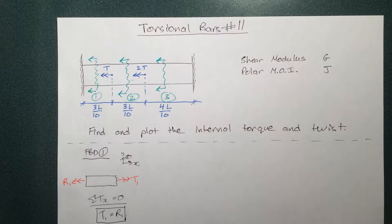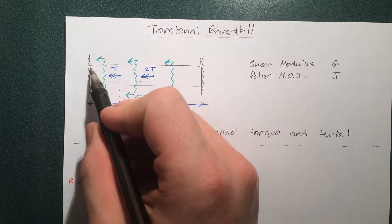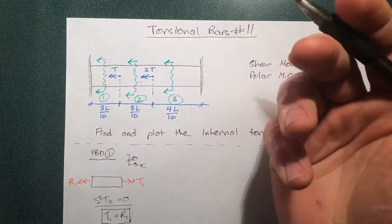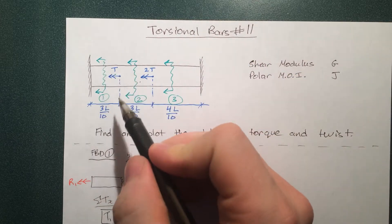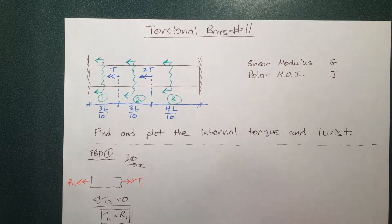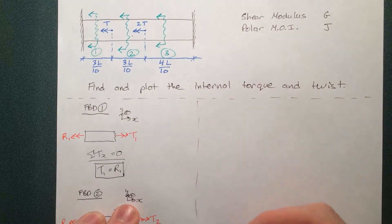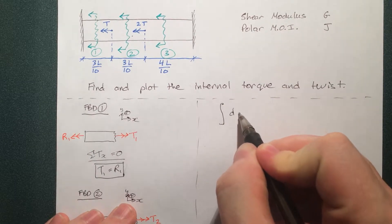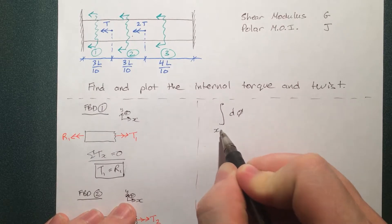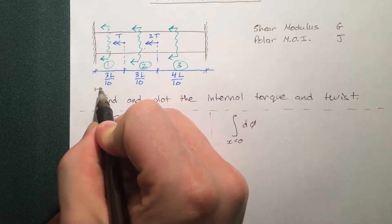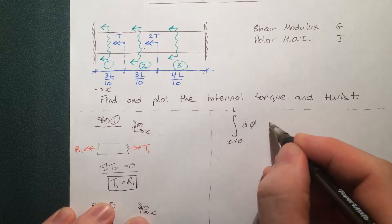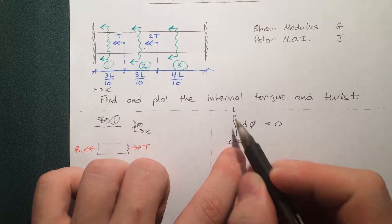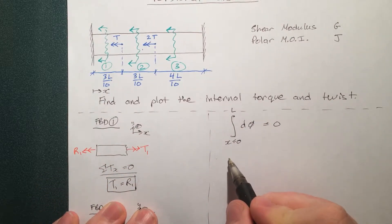Since the bar is fixed at the wall, the amount of twist at each wall is zero. It shouldn't be twisting where it's attached to a fixed wall at either end. In between it can do whatever it wants, but it has to start at zero, do its thing, and come back to zero. So we can say the sum of all the displacements from x equals zero to x equals L — the full length — has to be zero. And if the sum of all displacements between the ends is zero, then the sum of the displacements broken down by section must also be zero.